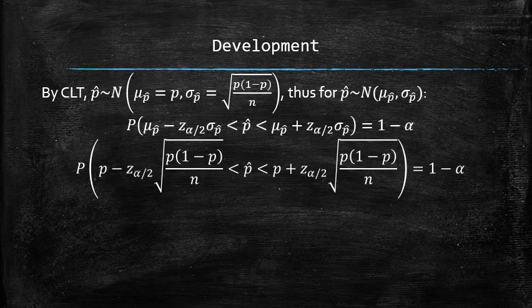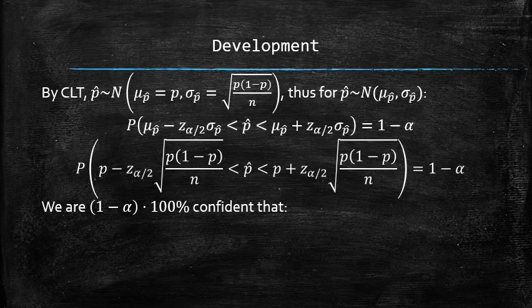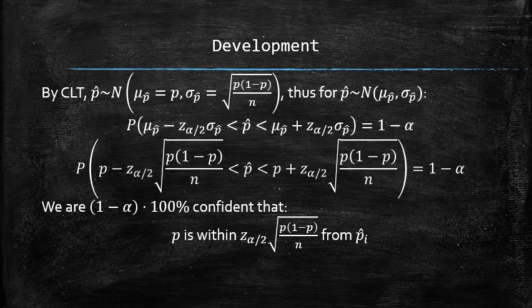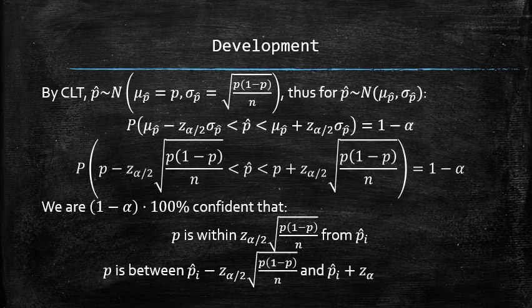Which can be interpreted that we are 1 minus alpha times 100% confident that p, the population proportion, is within z alpha standard deviations away from p hat. In other words, we are 1 minus alpha times 100% confident that p is between p hat minus z alpha over 2 standard deviations and p hat plus z alpha over 2 standard deviations.